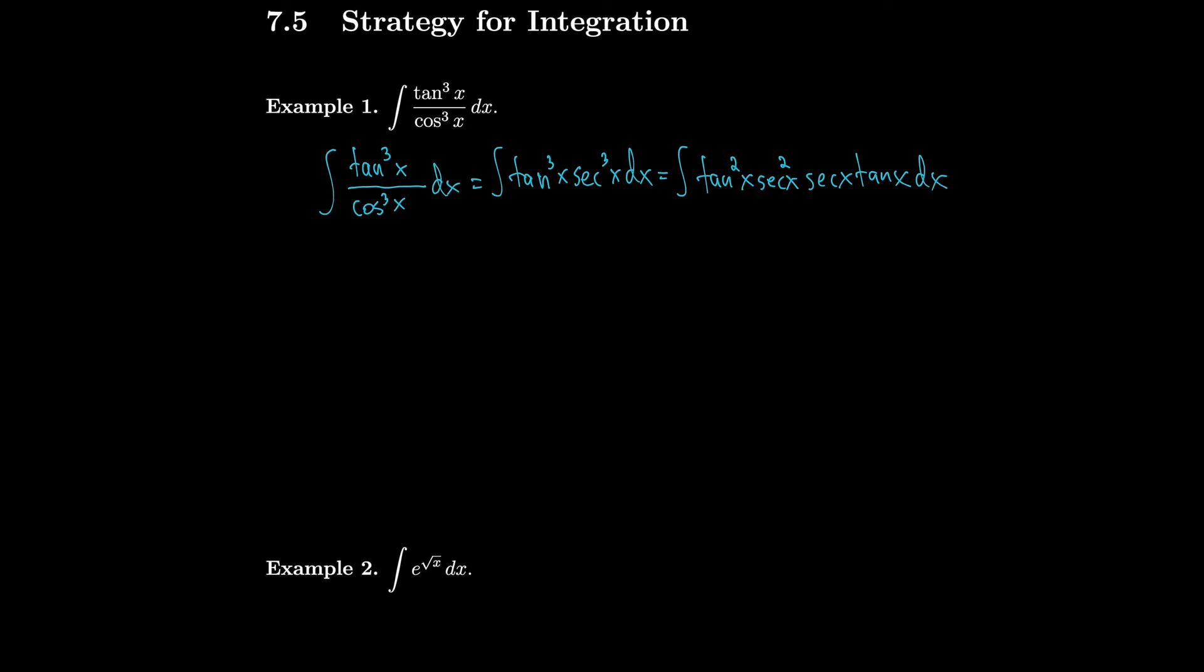So we can pull out a tangent and a secant to get tangent squared secant squared times secant tangent. That enables us to write the entire thing in terms of secant except for the secant tangent dx which will end up being du. So we use the identity secant squared minus 1 equals tangent squared. We keep our secant squared, we keep our secant tangent, and then you could just do a substitution at this point and you would arrive at the solution.